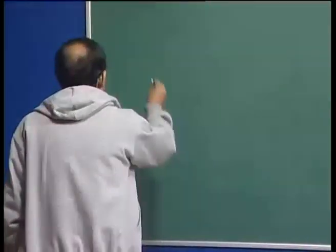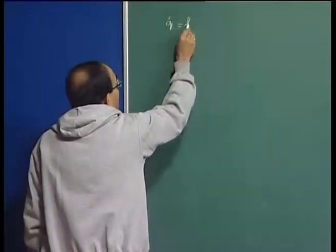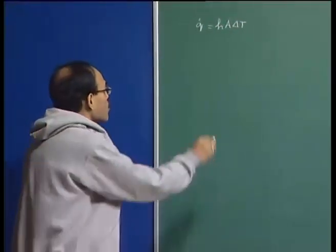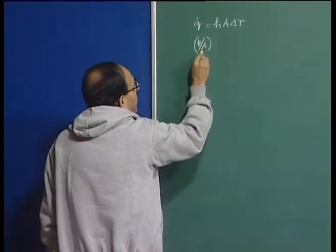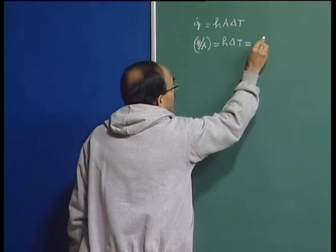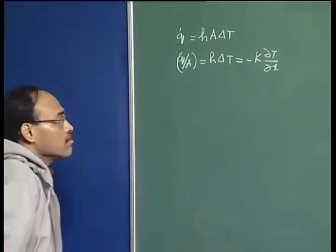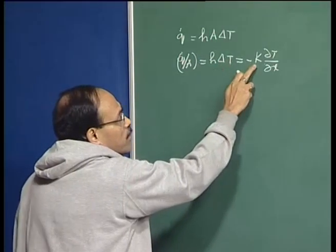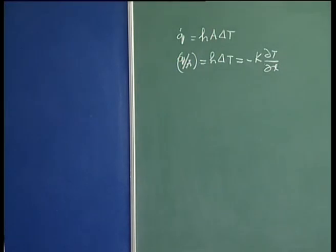The rate of heat flow is given in terms of a heat transfer coefficient and the delta T, in which delta T is the driving force. The corresponding heat flux is q-dot divided by A, which is equal to minus k times dT/dx. So this is the flux, the heat transfer coefficient, differential temperature, thermal conductivity, and the temperature gradient.